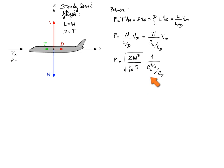Now what varies is the second part, and minimum power is achieved when CL to the three halves divided by CD is maximum. So we need to find the condition under which the derivative of this quantity is zero, and let's do that on a separate page.